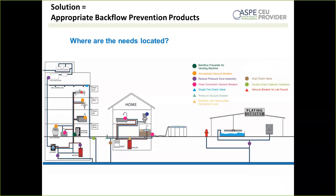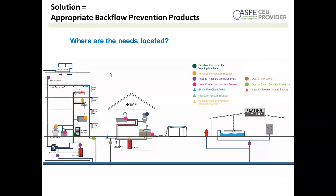Cross-connections are extremely common and all require appropriate backflow protection. Here we have three different buildings — a couple of commercial buildings and a residence. They have containment devices right at their entries to the water mains — actually three different containment devices, which is important and we'll discuss later. In addition, they also have isolation protection at all different points of use: sinks, vending machines, laundry, boilers, sprinkler systems, hose bibs. Cross-connections are all over the place, which is why we need lots of different kinds of backflow preventers.